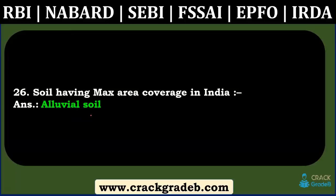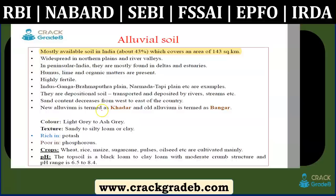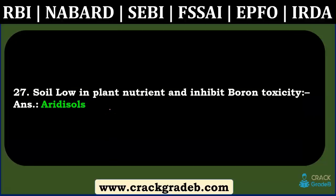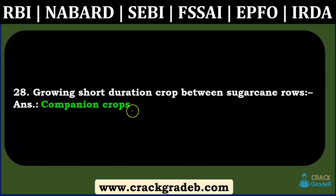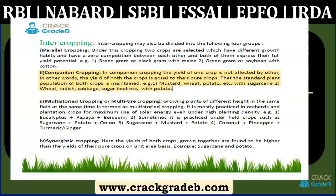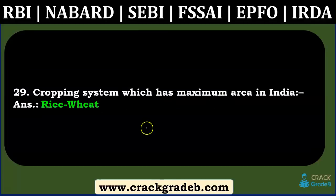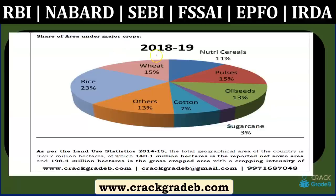Soil having maximum area coverage in India — Alluvial soil. This is an important question repeated many times in the static soil chapter. Soil low in plant nutrients and exhibiting boron toxicity — acidic soils — this was not covered. Growing a short-duration crop between sugarcane rows — the answer is companion cropping, which is covered under inter-cropping in our study material.